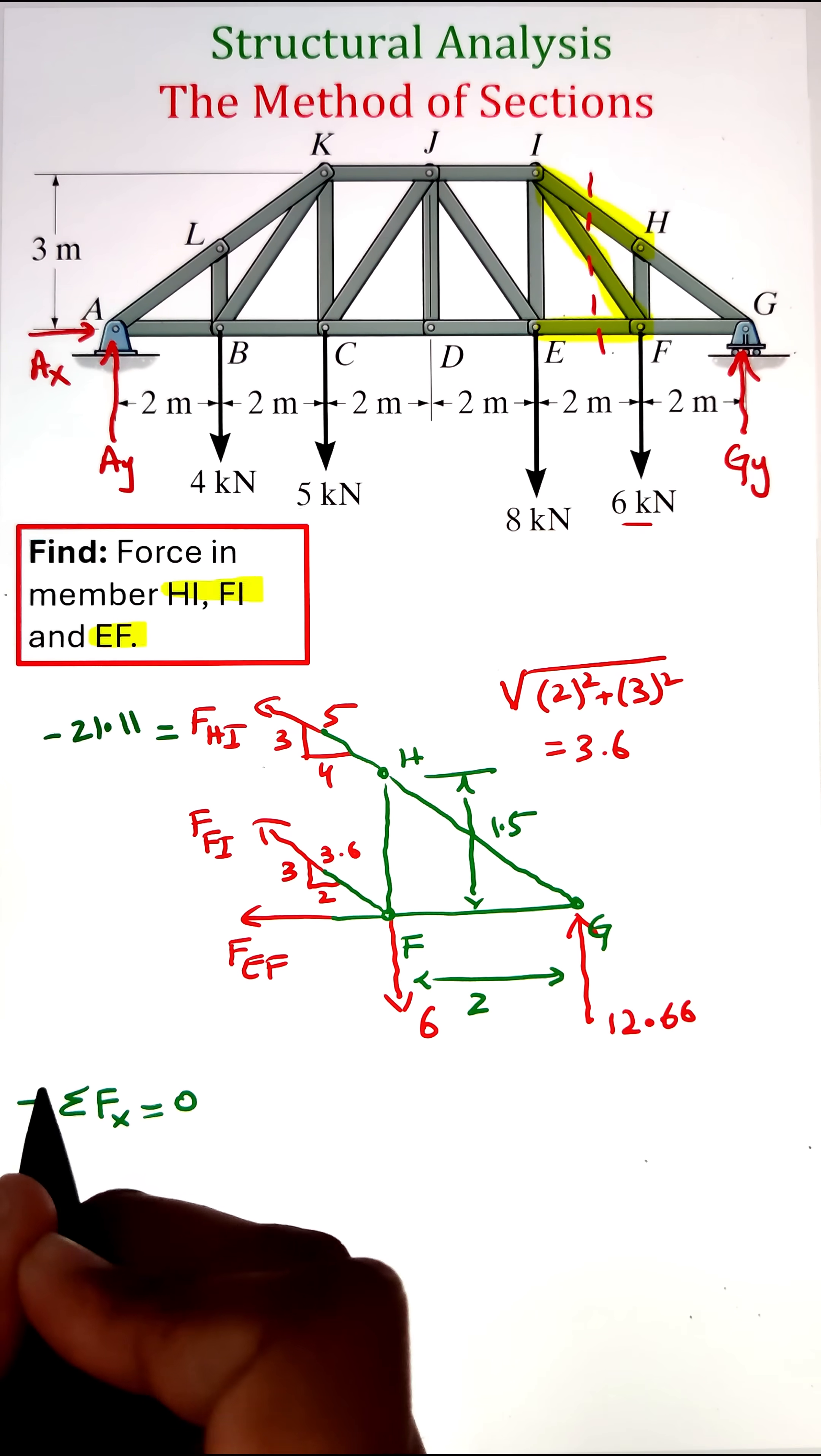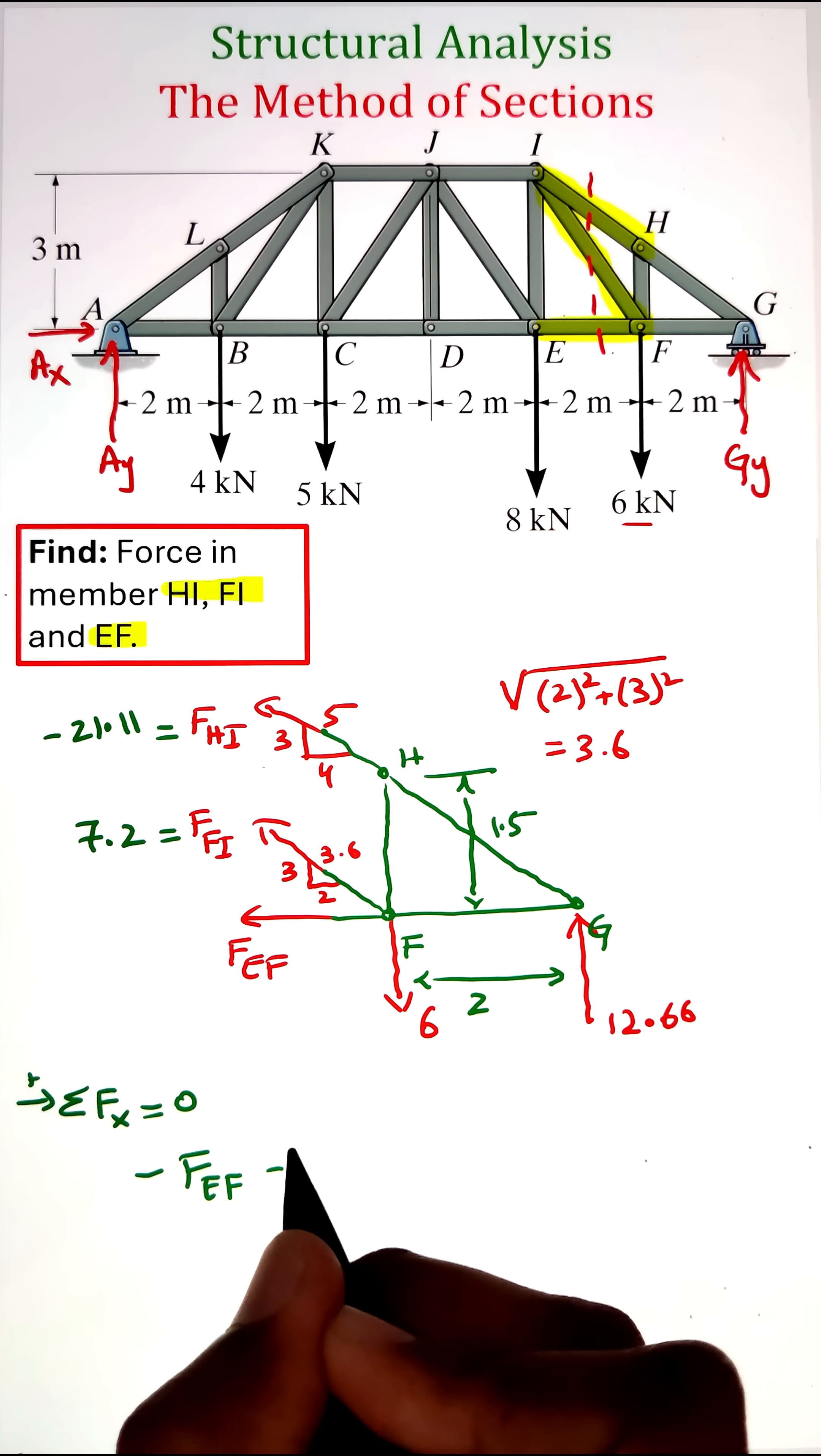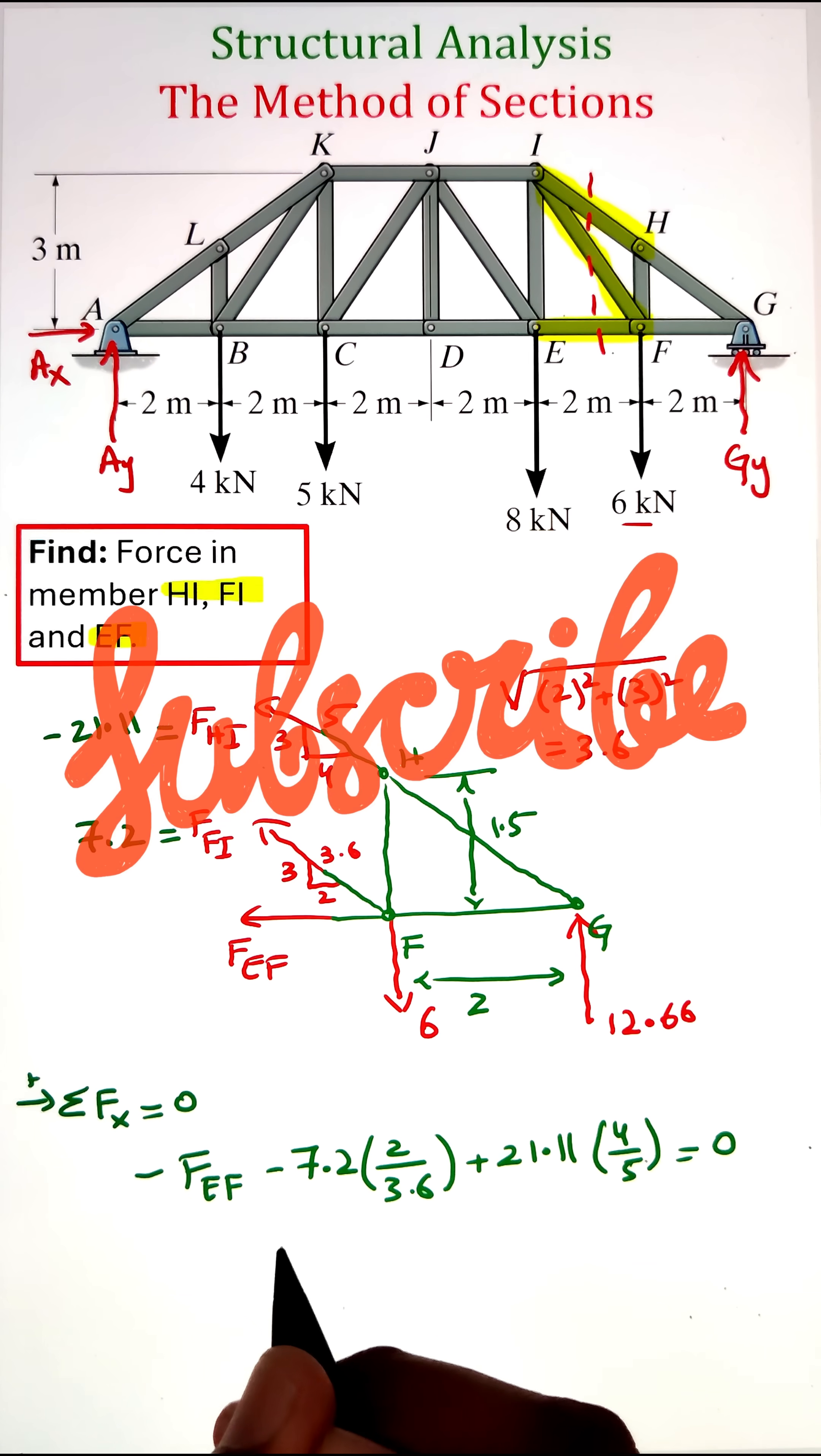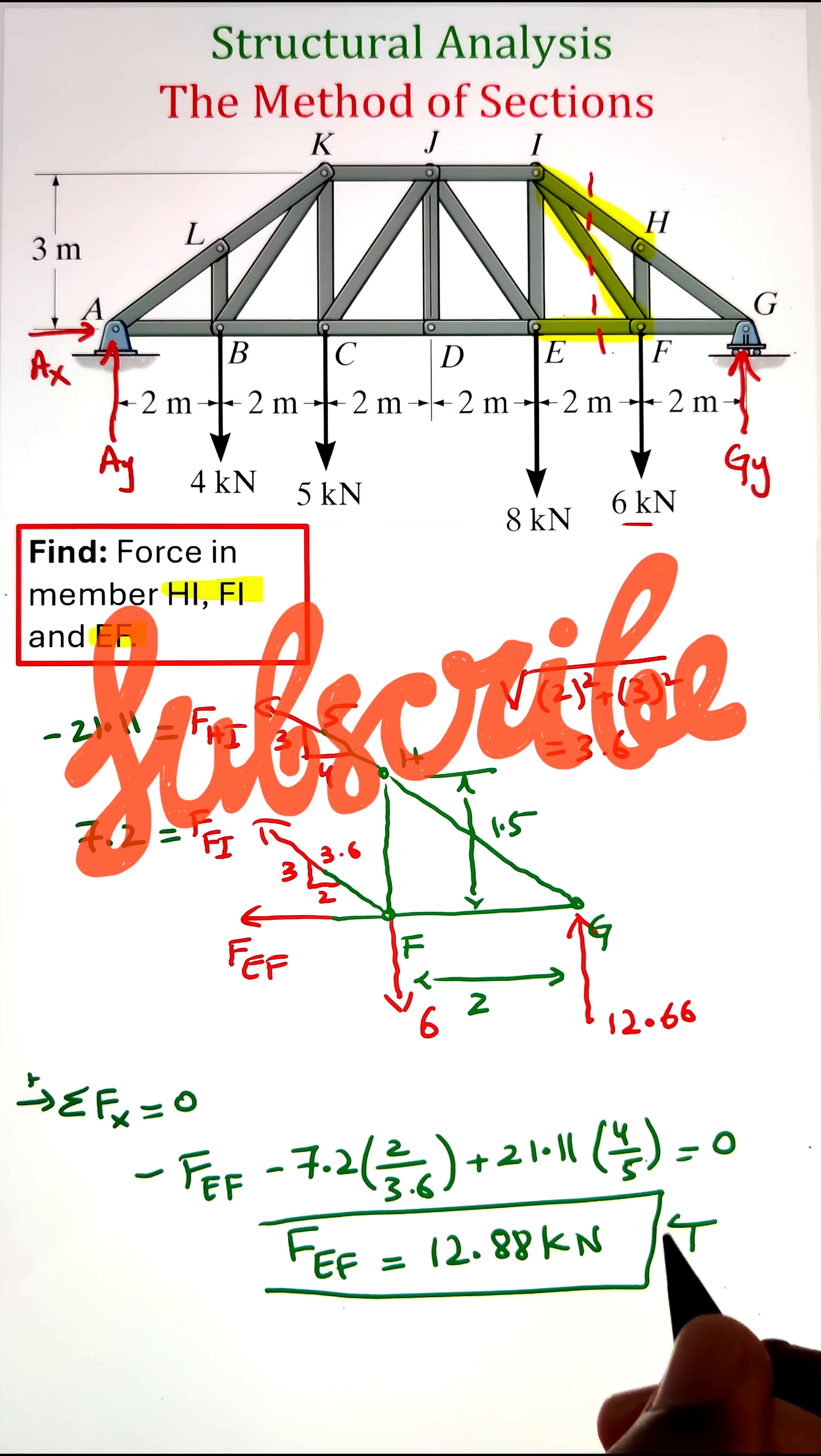Finally, we can find the force in member EF by writing the summation of forces along the horizontal direction equals zero. Besides force FEF, we have the horizontal component of force in member FI, calculated by multiplying 7.2 by 2/3.6, and the horizontal component of force in member HI, calculated by multiplying negative 21.11 by 4/5. This gives us the force in member EF as 12.88 kilonewtons.